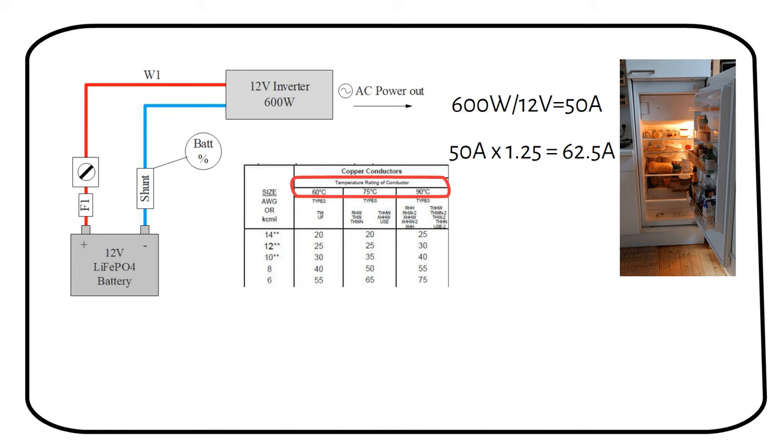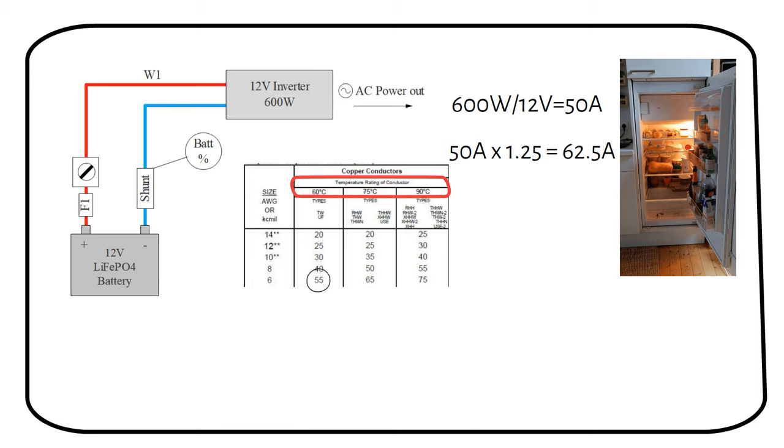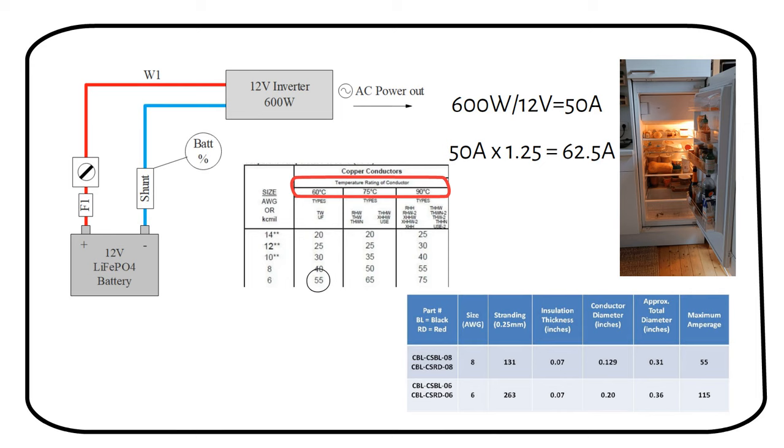For example, a 6 gauge TW wire, rated for 60 degrees Celsius, can carry a maximum of 55 amps. While a 6 gauge welding wire, rated for 105 degrees Celsius, can carry 115 amps. The main reason is the type of insulating jacket around the wire.